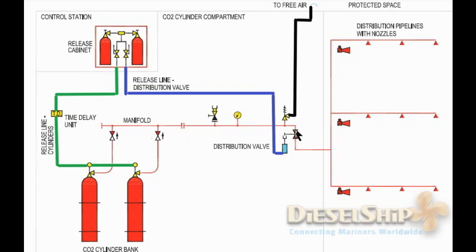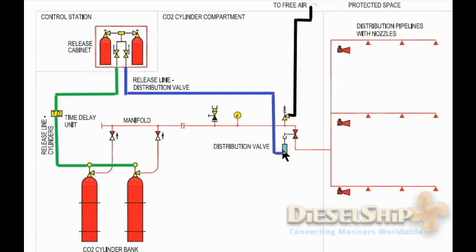On modern ships there is a pressure switch on the manifold. When there is a small leak or some pressure in the line, it detects the pressure and gives an alarm — either a CO2 leak alarm or a CO2 release alarm. The pressure switch can be calibrated, for example 1 to 10 bar as leak alarm and above 10 bar as release alarm, depending on the ship's automation system. After that, the distribution valve is operated through a piston — pushing the piston up opens the valve and the CO2 goes to the engine room.